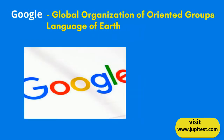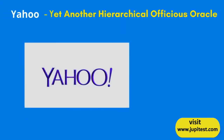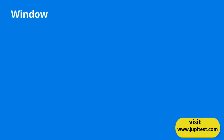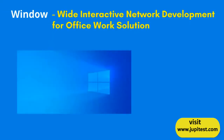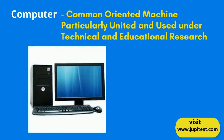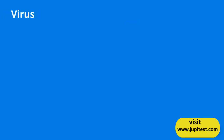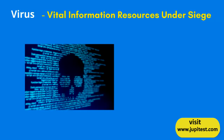Google: Global Organization of Oriented Groups Language of Earth. Yahoo: Yet Another Hierarchical Officers Oracle. Computer: Common Oriented Machine Particularly United and Used Under Technical and Educational Research. VIRUS: Vital Information Resources Under Siege.